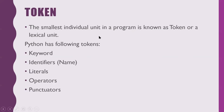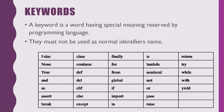There are five types of tokens: keywords, identifiers, literals, operators, and punctuators. A keyword is a word with a special meaning reserved by the programming language. These are words that Python has already reserved for its own purpose, each with a different meaning, and they must not be used as normal identifier names.